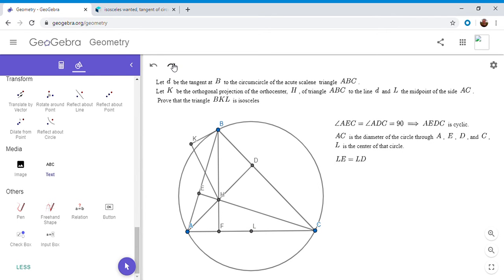So therefore, LE equals LD. So if we know that LE is LD, then maybe we could try to use that to show that LK is LB through congruent triangles.